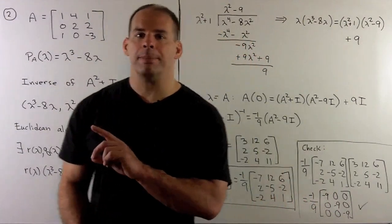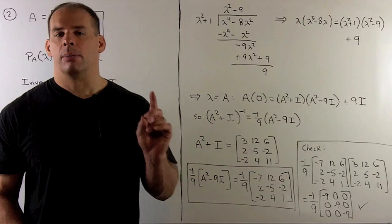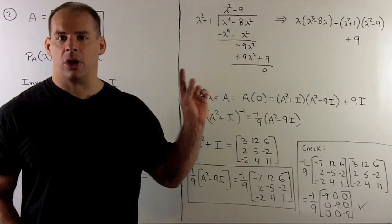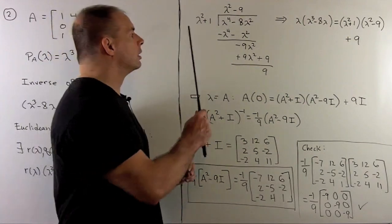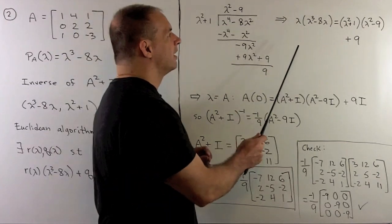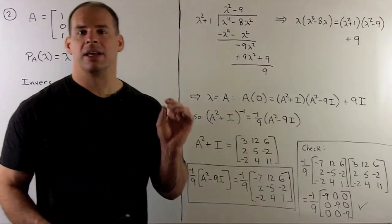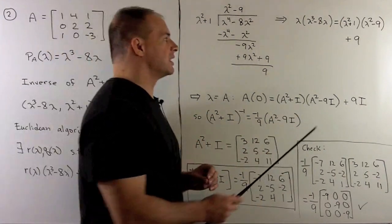Now, we don't need all of that. I'll just take lambda cubed minus 8 lambda, multiply by lambda, and then we'll just do the long division. Now, if we decode this, I have lambda times lambda cubed minus 8 lambda equals lambda squared plus 1 times lambda squared minus 9 plus 9.